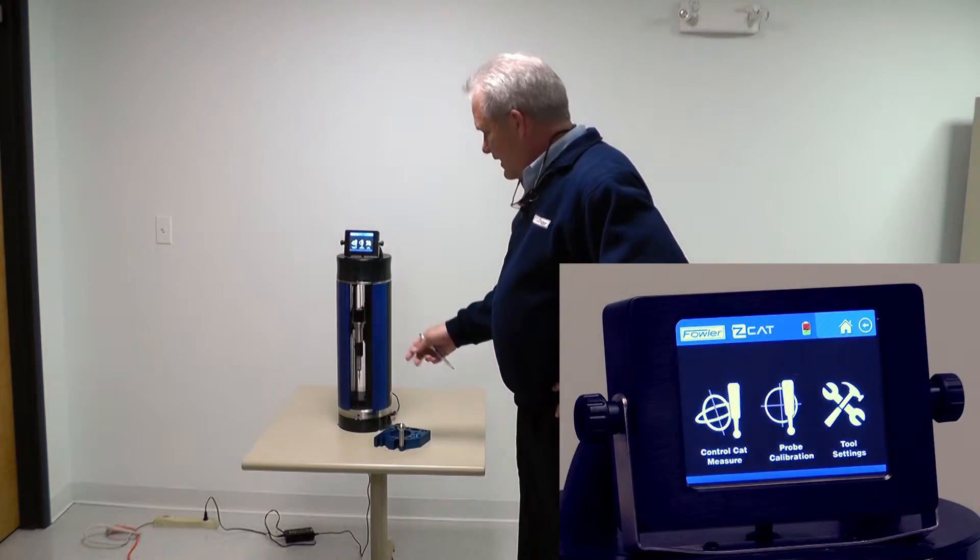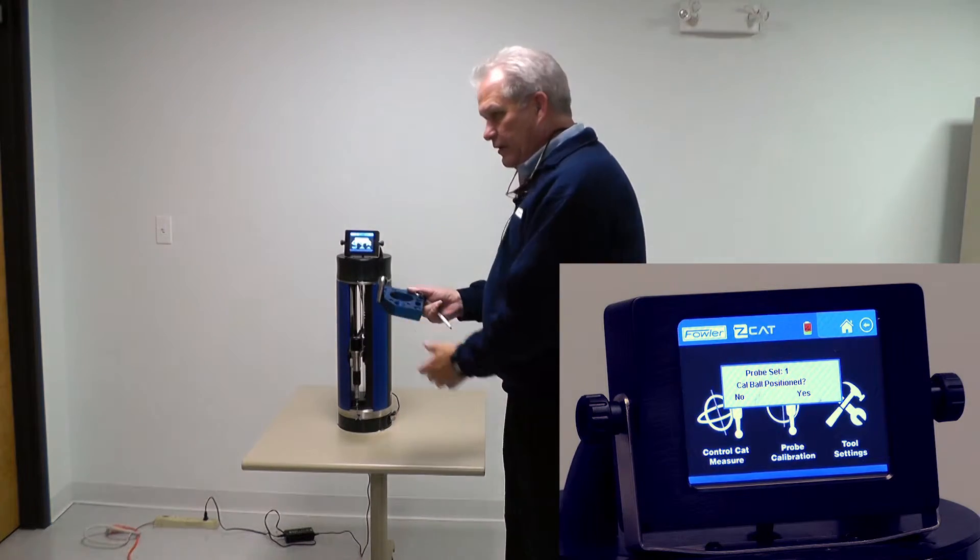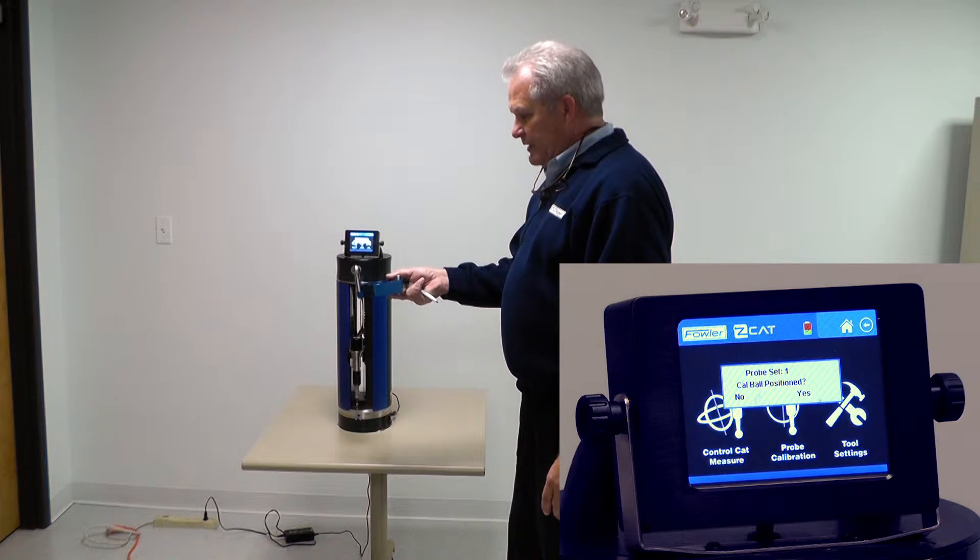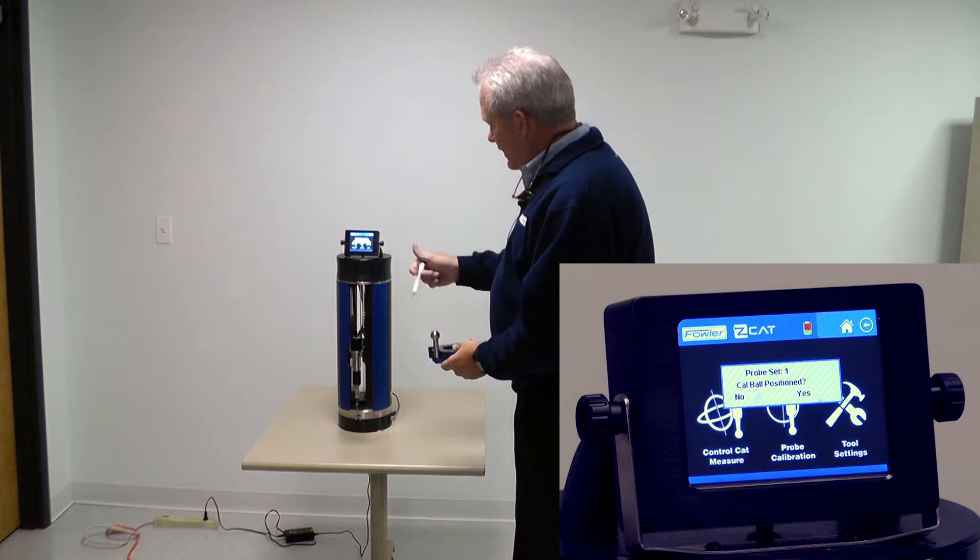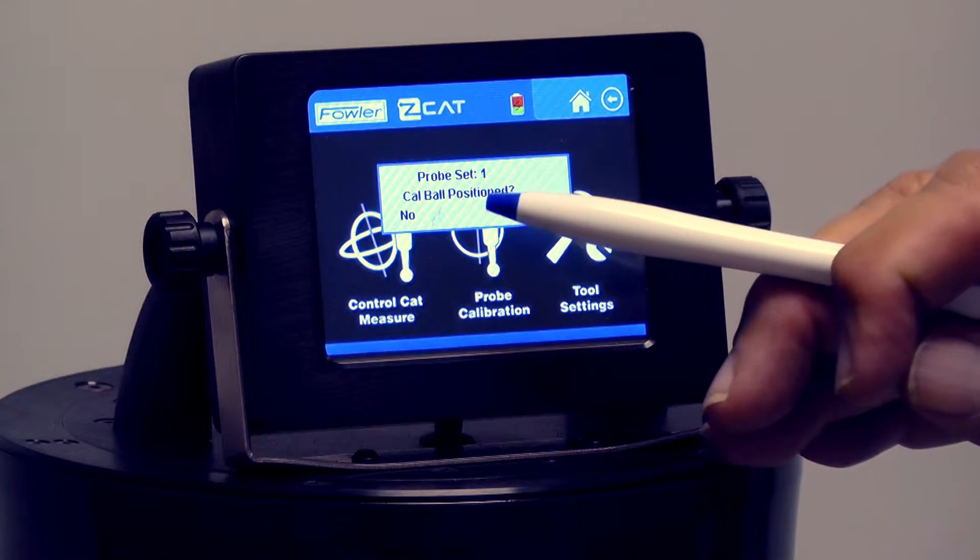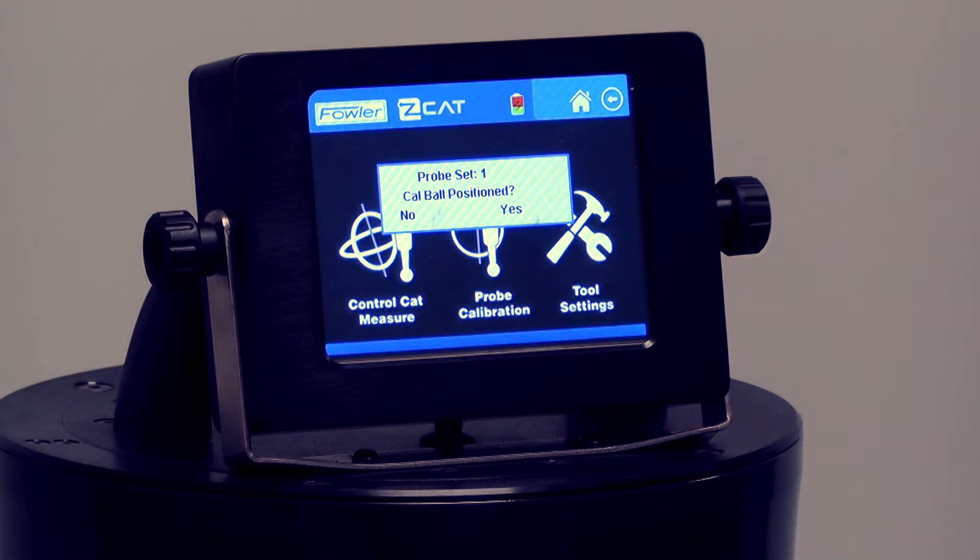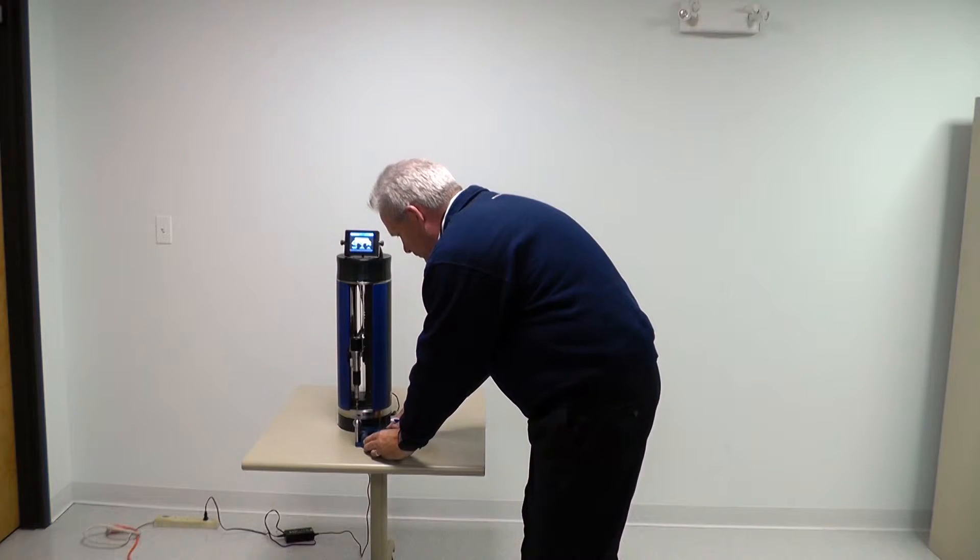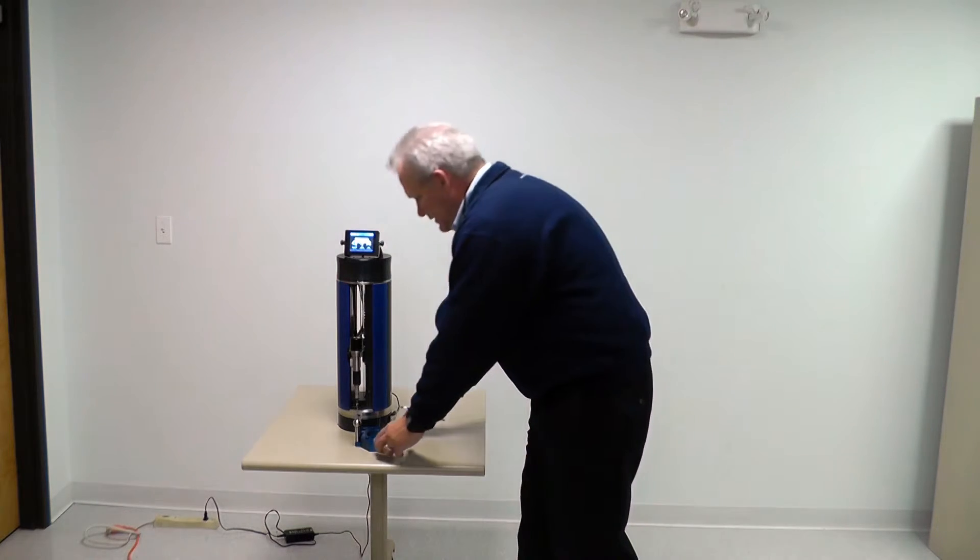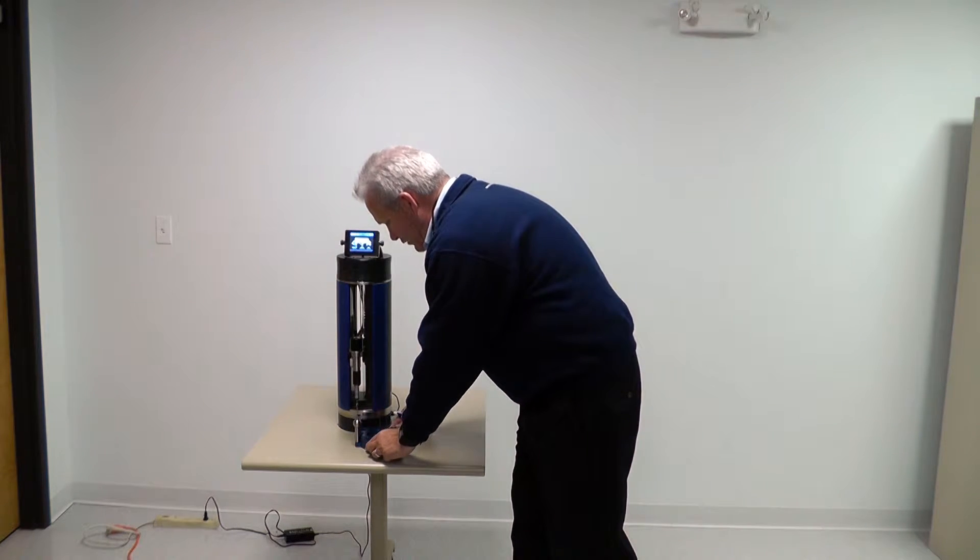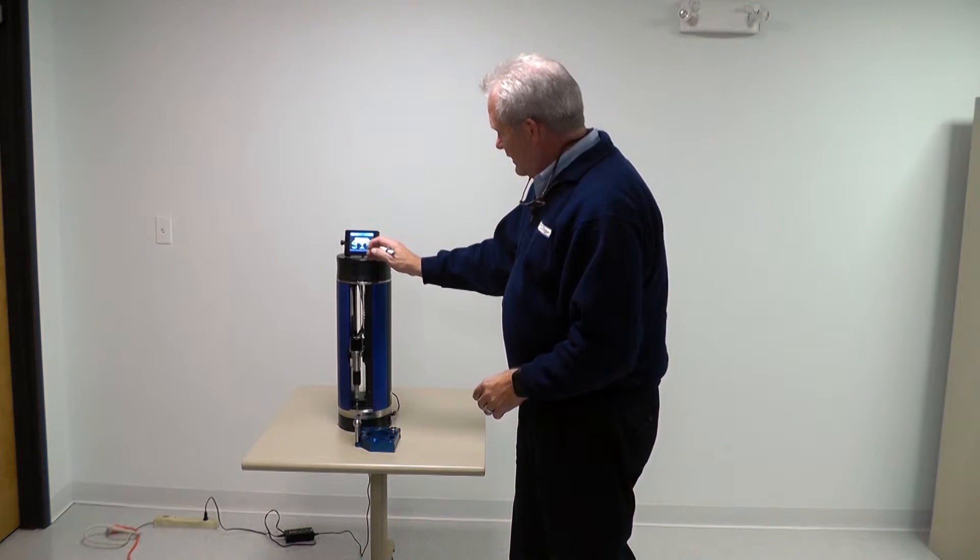The ZCAT will drive to a location, and this is where our setting master and our test piece come into play for the calibration. The screen now says probe set one cal ball position, question mark, yes or no. All we're going to do is position this ball directly underneath the vertical probe, and it doesn't have to be within a micron or anything like that. I just get it close, and when I hit yes...